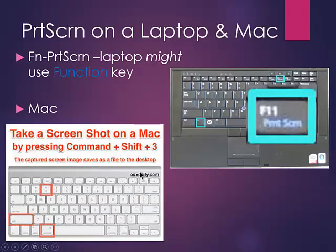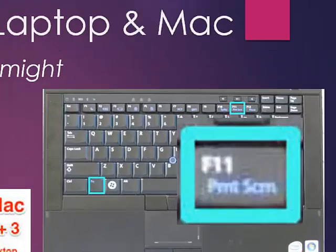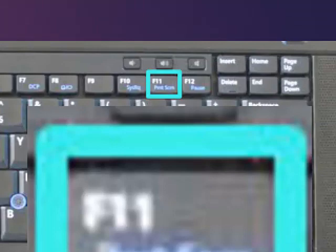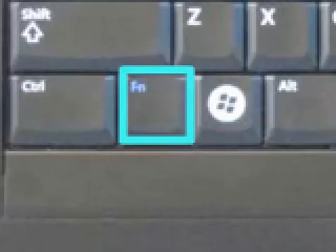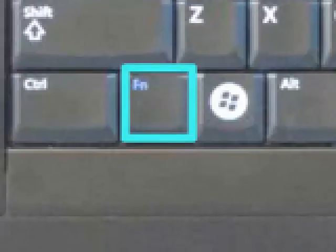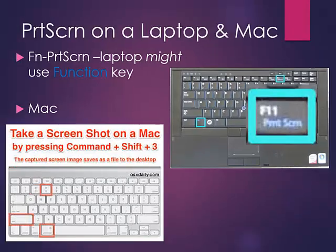Now if you're on a laptop, you have to check — perhaps your print screen key is blue. I know you can't read that, but you can see that it's blue. If yours is blue, then you have to use the function key down in the front left side of the keyboard. So it would be Function+Print Screen, but only if it's blue.